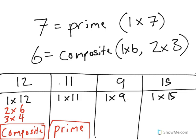What about 9? I could do 1 times 9. I could also do 3 times 3. That means that this number is composite.